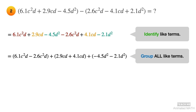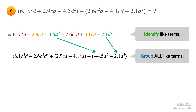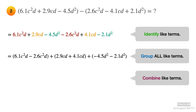Next, group all like terms and arrange them in standard form. Group the terms with c squared d, group the terms with cd, group the terms with d squared. Last, combine like terms using addition and subtraction. And the final answer is 3.5c squared d plus 7cd minus 6.6d squared.